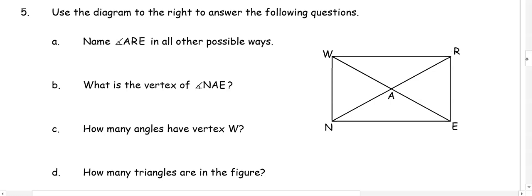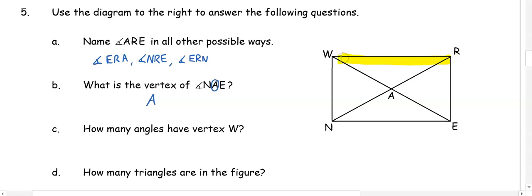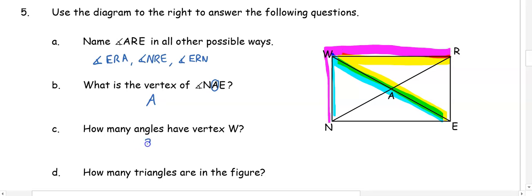Using the diagram: name angle ARE in all possible ways. ARE extends across the diagram, so we can switch the first and last letters to get angle ERA. Because A and N are on the same line, we can substitute N for A — giving us angle NRE and angle ERN. For part B, the vertex is always the center letter, so our vertex is R. For part C, W has this angle, that angle, and the large combined angle — so W has three angles.